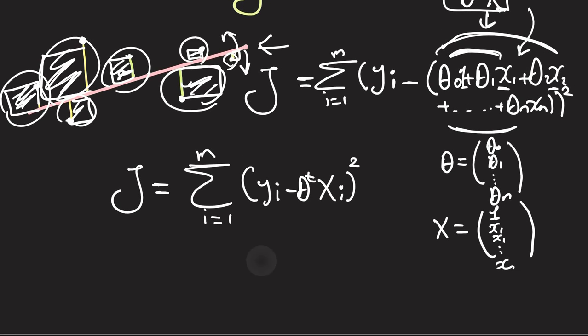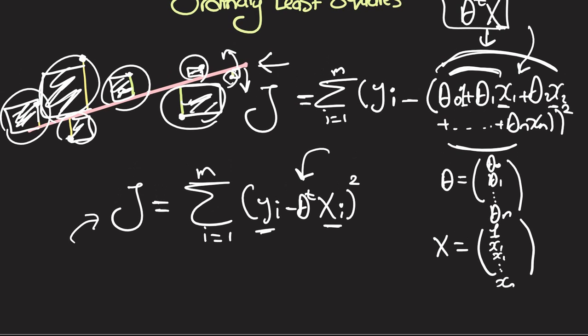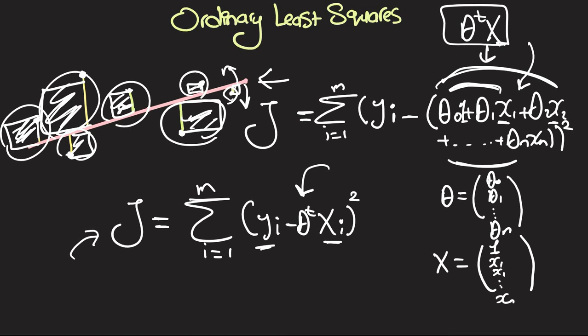So what we're going to try to do in the next video is minimize this multivariable function. You have your data set known, what's unknown is your thetas, and your goal is to find the best set of thetas that makes the sum as low as possible.